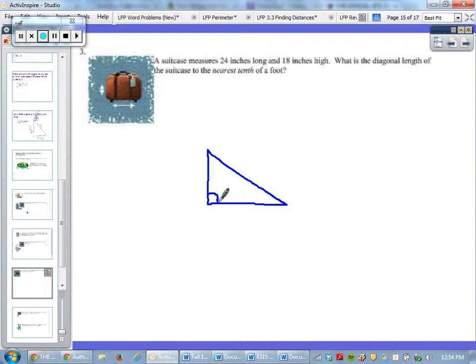A suitcase measures 24 inches long and 18 inches high. So long would go down here, 24 inches long, 18 inches high. What is the diagonal length of the suitcase to the nearest tenth? Diagonal again, that means hypotenuse, that means C.